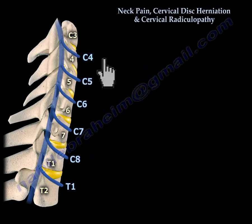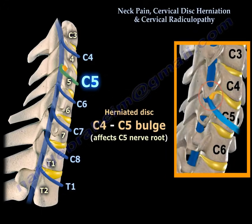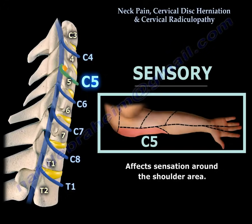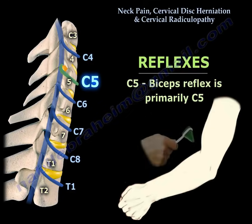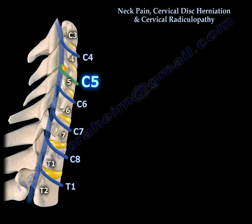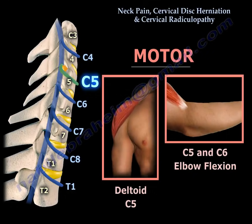If you have a C4-C5 disc bulge, it can affect the C5 nerve root, which will affect sensation around the shoulder area. C5 will also affect the biceps reflex, as the biceps reflex is primarily C5. As regards motor function, C5 affects deltoid power and strength, and it could affect elbow flexion, which is C5 and C6.